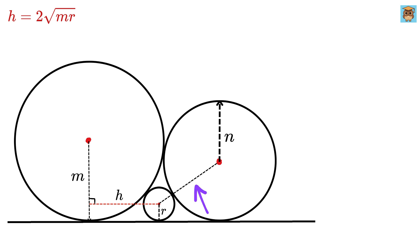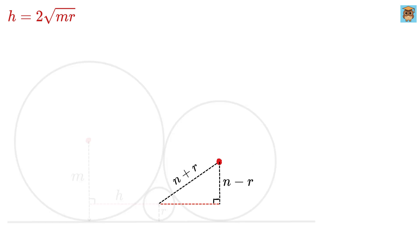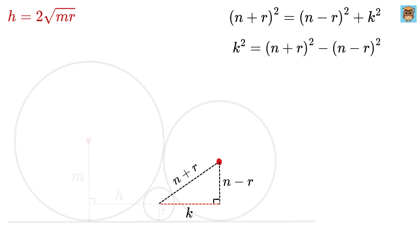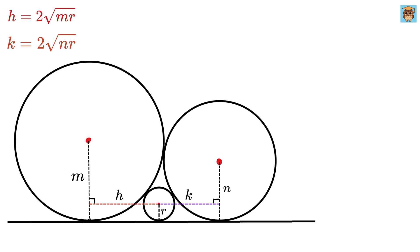Similarly, connect the centers of circle n and circle r. That distance will be n plus r. Draw radius n and then a horizontal line perpendicular to it. The small piece will again equal r, so the remaining piece is n minus r. Let the length of this horizontal segment be k. Using Pythagoras theorem: (n+r)² = (n−r)² + k², therefore k² = 4nr, or k = 2√(nr).